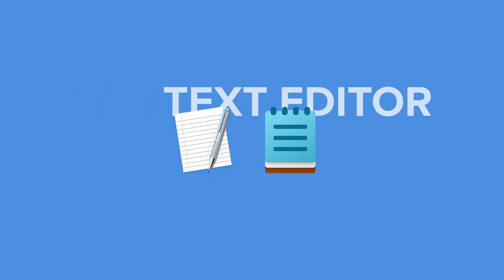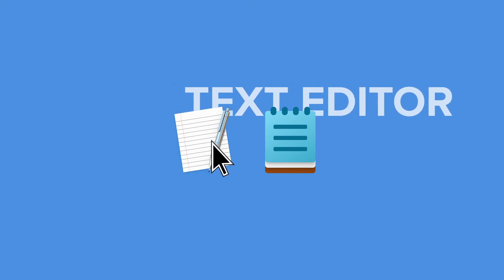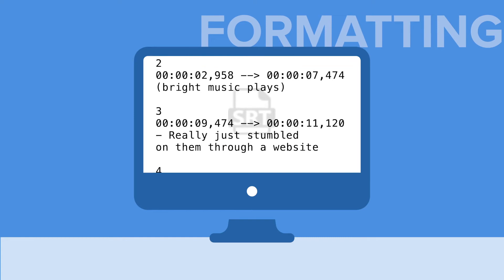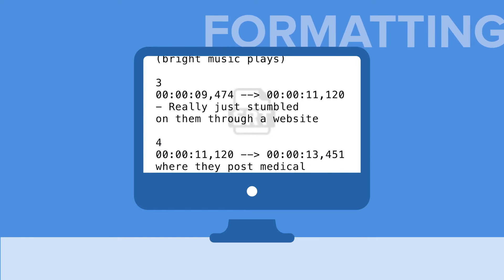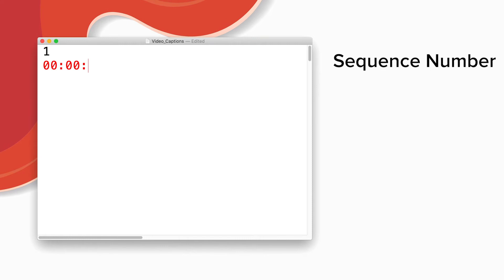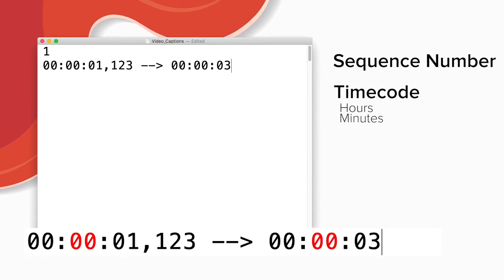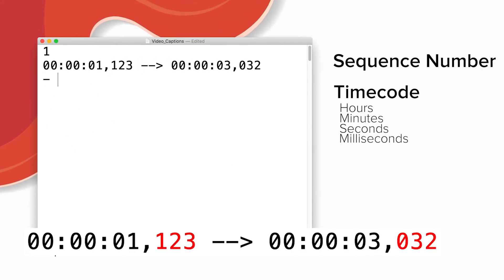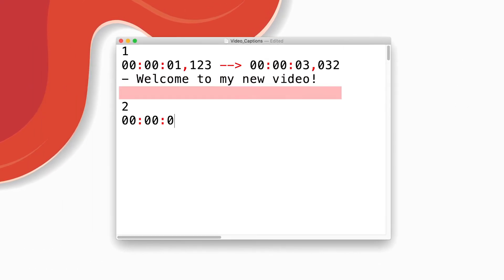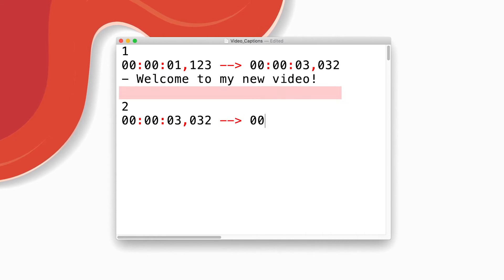To create an SRT file, start by opening a text editor on your computer and type the captions using the following format. One subtitle is composed of three things: a sequence number, a beginning and ending timecode for that section stating hours, minutes, seconds, and milliseconds, and the actual text which is displayed on the screen. Keep in mind that every break and punctuation mark is important to display the subtitles properly on the screen.